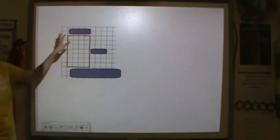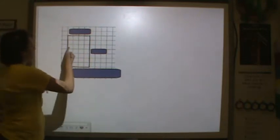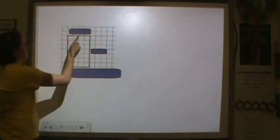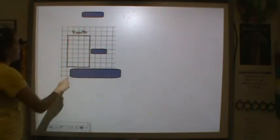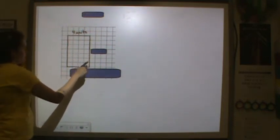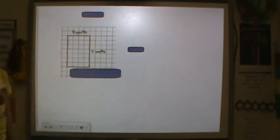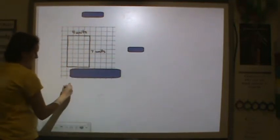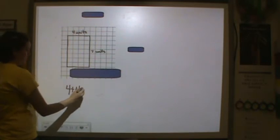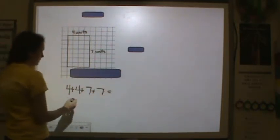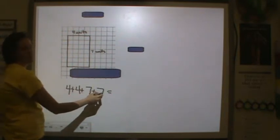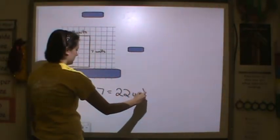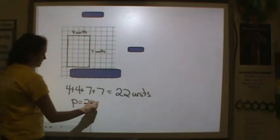So yesterday, when I talked to you about area and perimeter, I was talking about square units and counting the edges. So here, if you counted across the top, you'd have 4 units across the top and 7 units across the side. If you counted across the top and across the bottom, you would get 4 plus 4 units, and then across the side, 7 plus 7 units. So your perimeter would be 4 and 4 is 8, 7 and 7 is 14, 8 plus 14 is 22 units. The perimeter is equal to 22 units.